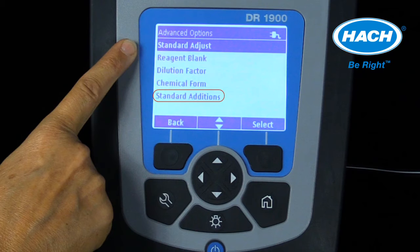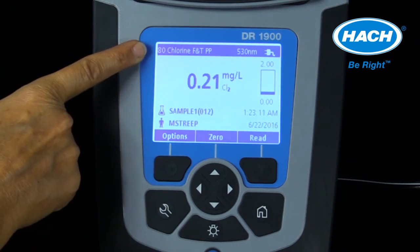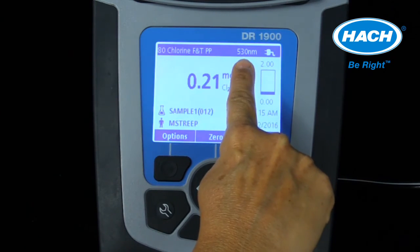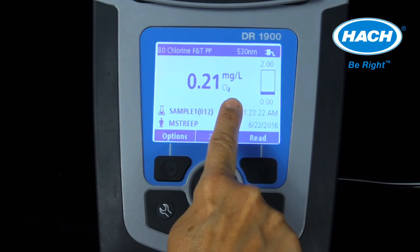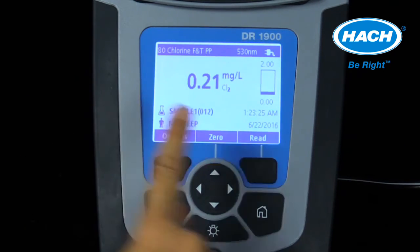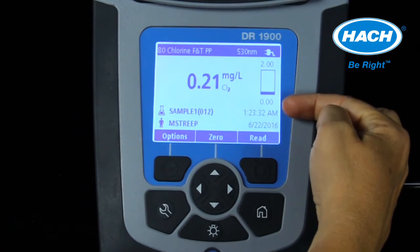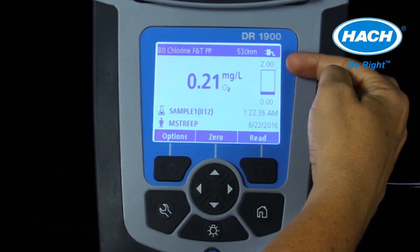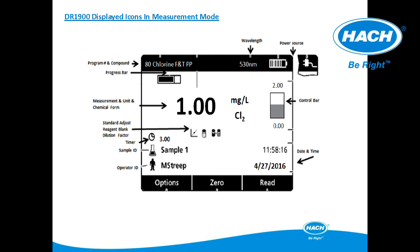Refer to the program's method written procedure for more information on this setting. The DR-1900 displays the same measurement information as the DR-3900 and DR-6000 spectrophotometers. Information includes program number and parameter, wavelength and power source, the measurement value, concentration and units, the sample ID and operator ID, and date and time. The control power feature on the right-hand side of the display shows where this measurement resided within the total concentration range of the program. This slide depicts all the icons that can be displayed during a measurement and all the features of the DR-1900 software.